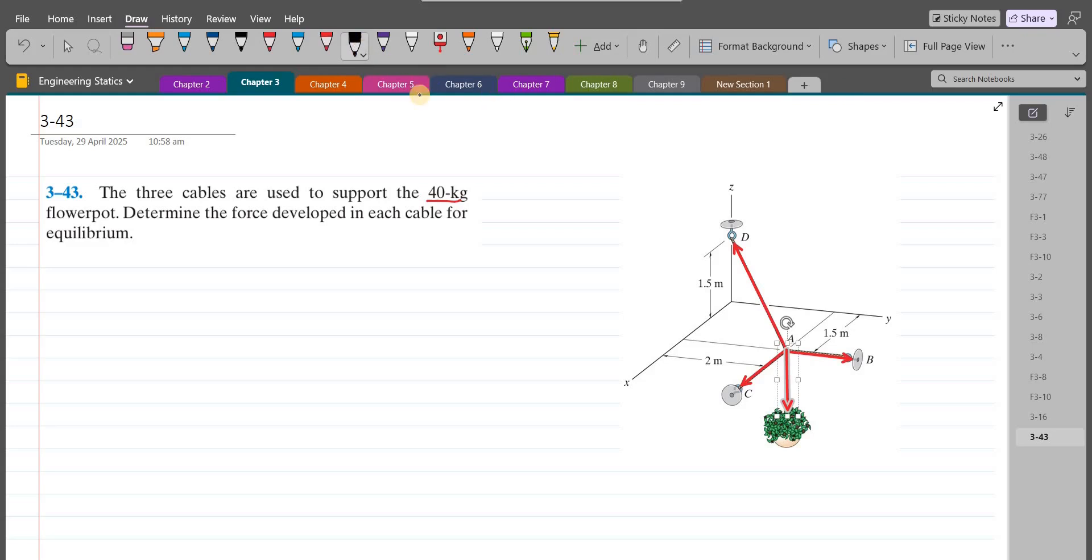Let's label them all. So this right here is FAD, this is FAB, this is FAC, and this is the weight force.